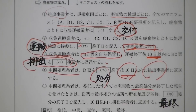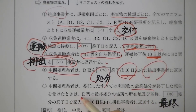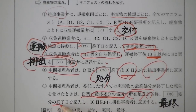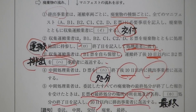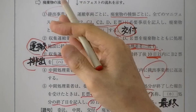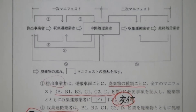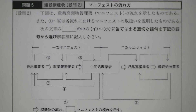中間処理業者は廃棄物を受け取り、燃やしたり砕いたりして処理します。処分終了後10日以内に排出事業者に返送します。委託した全ての廃棄物の最終処分（埋め立て）が終了した報告を受けた時は、最終処分の場所・所在地・名称、最終処分の終了日を記入して、10日以内に排出事業者に返送します。